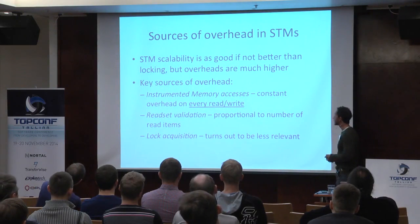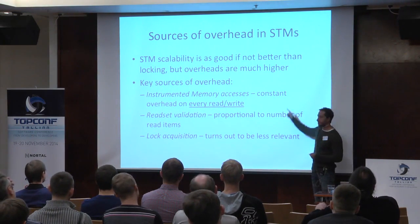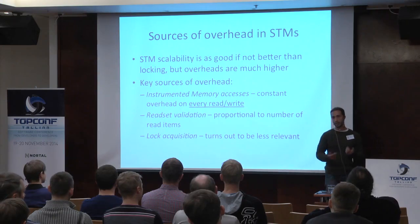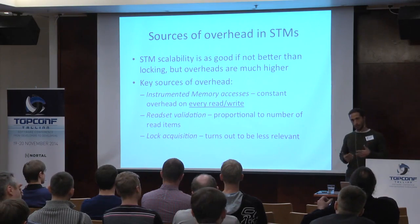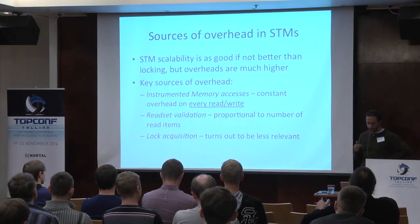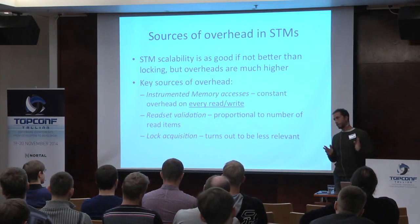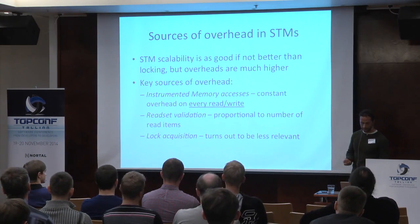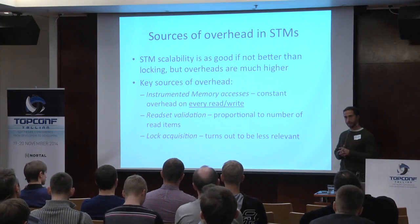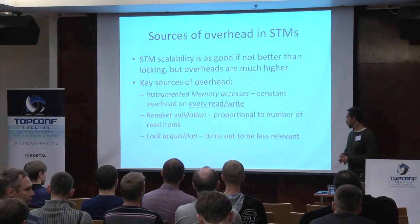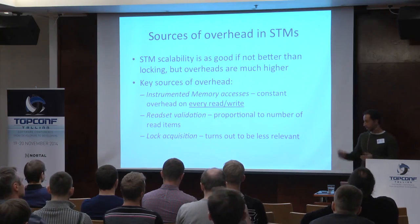The main sources of overhead in software transactional memory are: first, the instrumentation of memory accesses — every read or write pays a penalty for checking safety; second, validation of the read set at commit time; and third, the lock acquisition phase at commit, although this turns out to be the least relevant cost among the three.